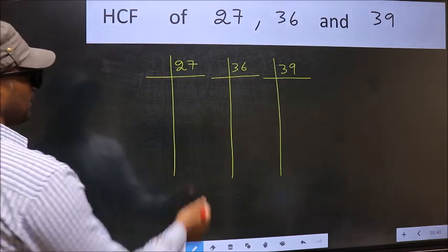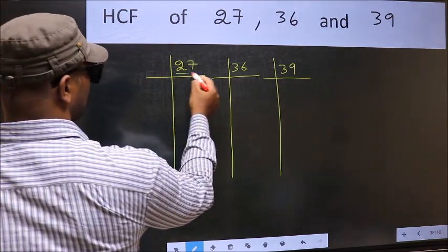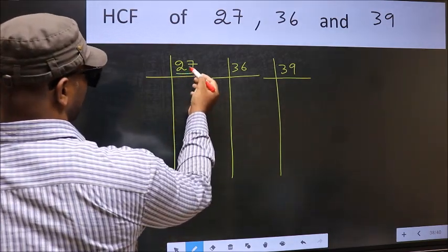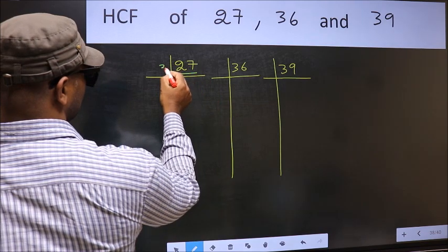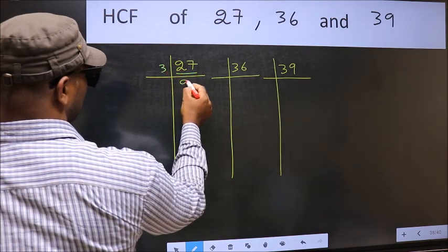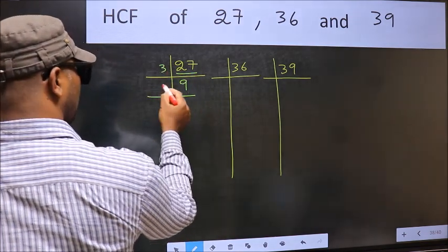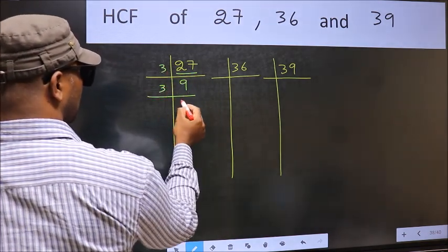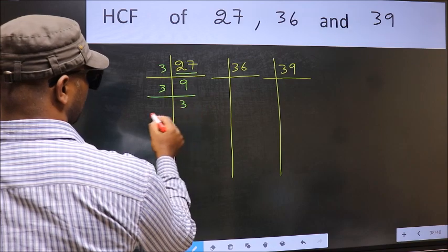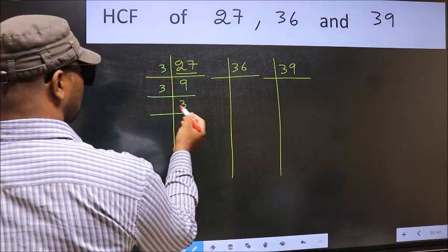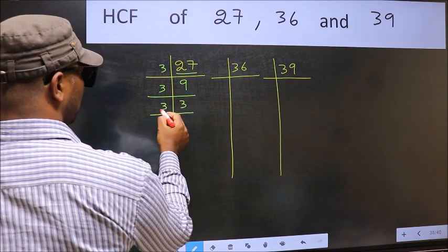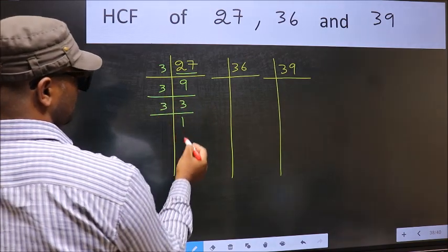Here we have 27. 27 is 3 nines, so 27 = 3 × 9. Now 9 is 3 threes, so 9 = 3 × 3. Now 3 is a prime number, so 3 = 3 × 1.